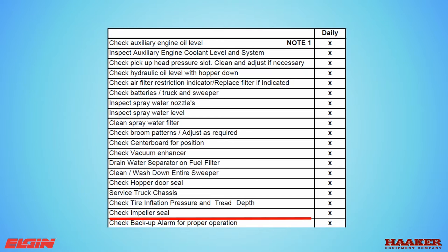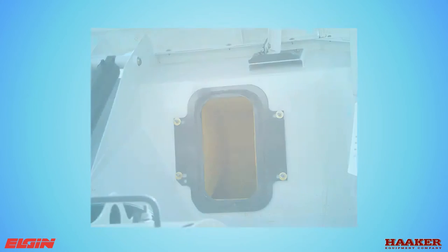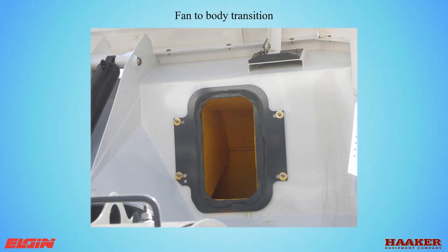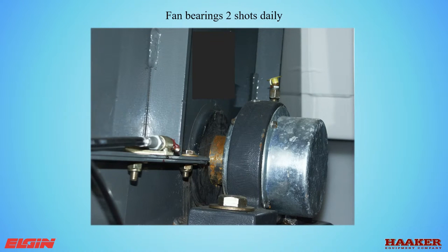Check the impeller fan housing seal — any air leak takes away from the suction needed to pick up debris. The transition on the body is adjustable; put grease on the fan housing seal, then lower the body to make a grease impression on the transition to see if it's adjusted correctly. It is also recommended to lubricate the fan bearing once a day after wash down using a hand grease gun only, with two pumps of grease only, using the proper grease.